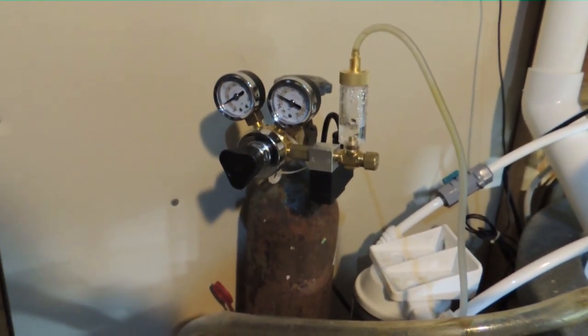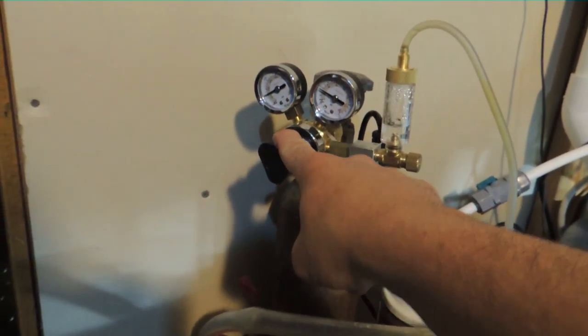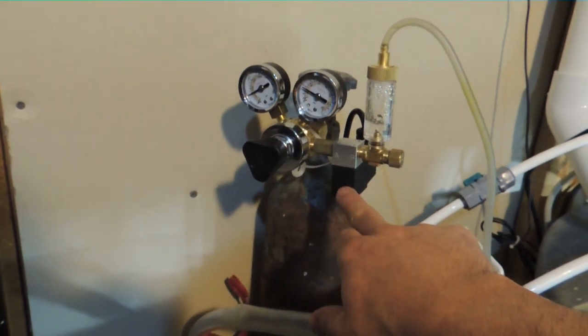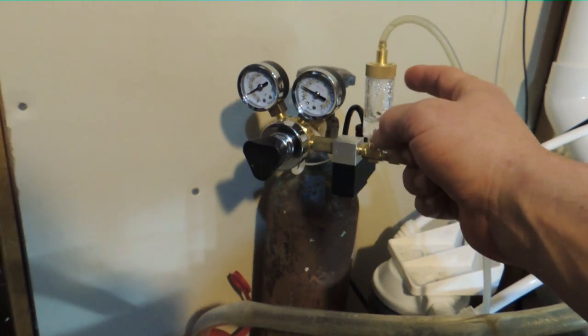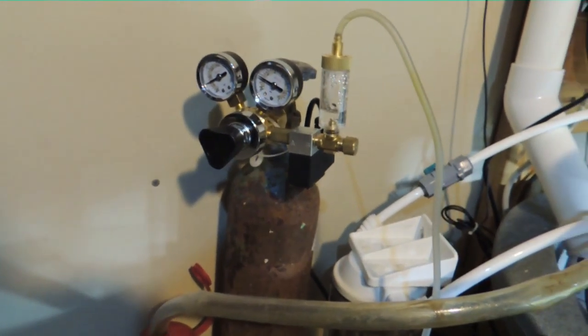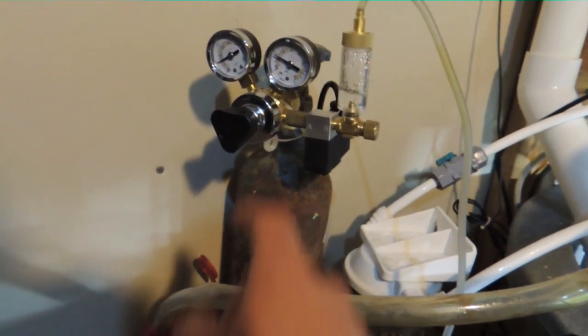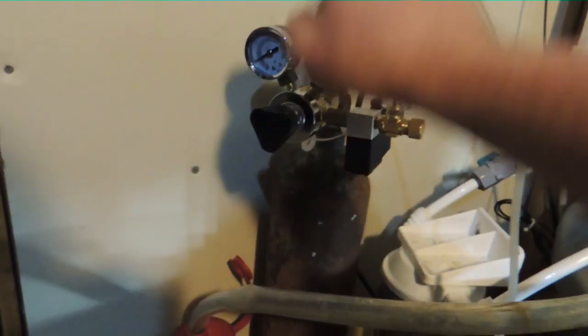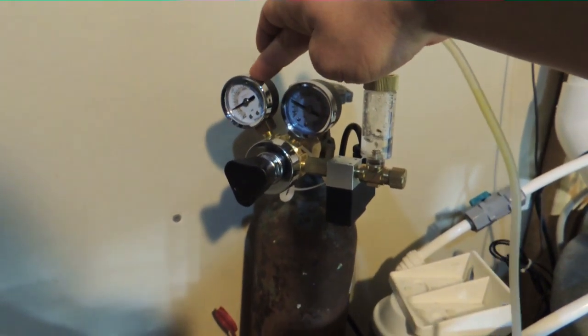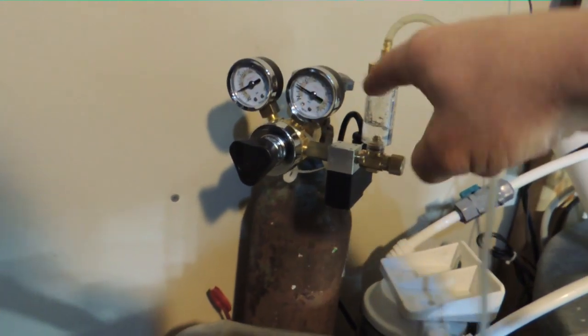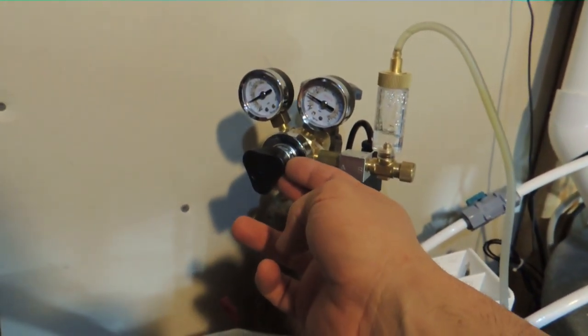But I bought the Milwaukee dual pressure regulator with the control solenoid and the bubble counter. I love the bubble counter. I would not want one of these without the bubble counter right there. It just makes it so easy to see what's going on and to adjust it. You have your gauge here to see how much pressure is in the tank. You have your gauge here to show how much pressure is going out. And of course this knob here is your adjustment.